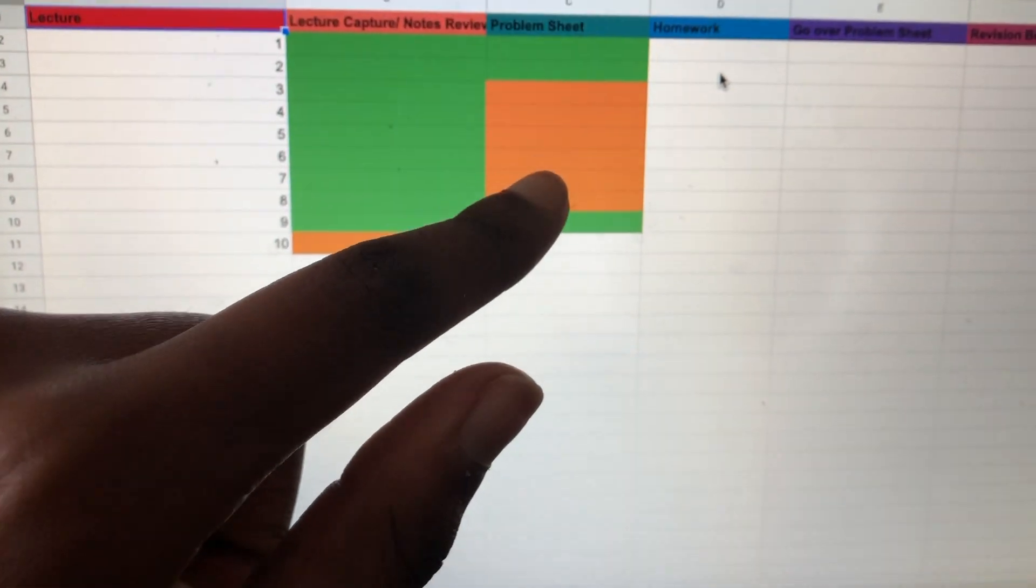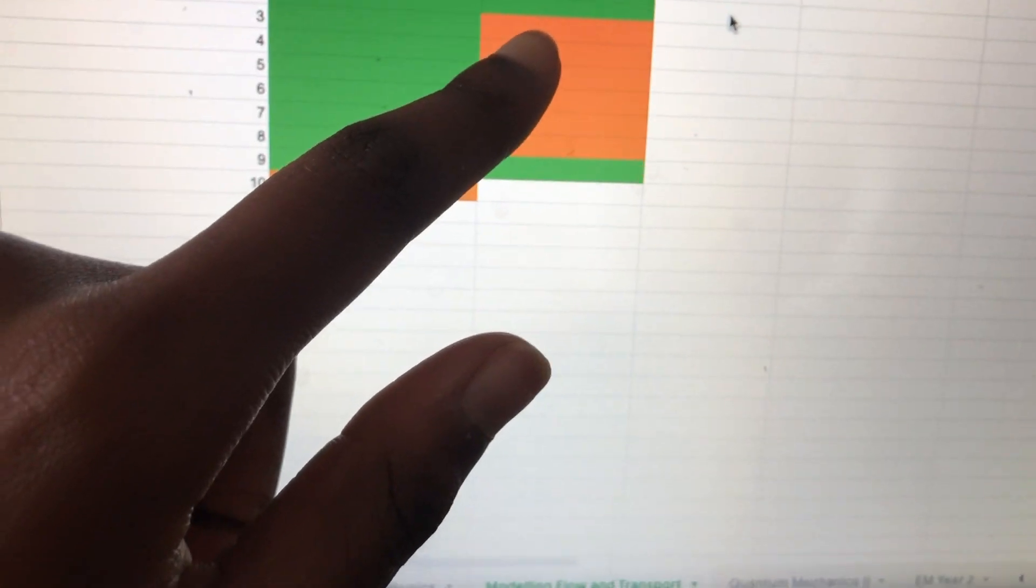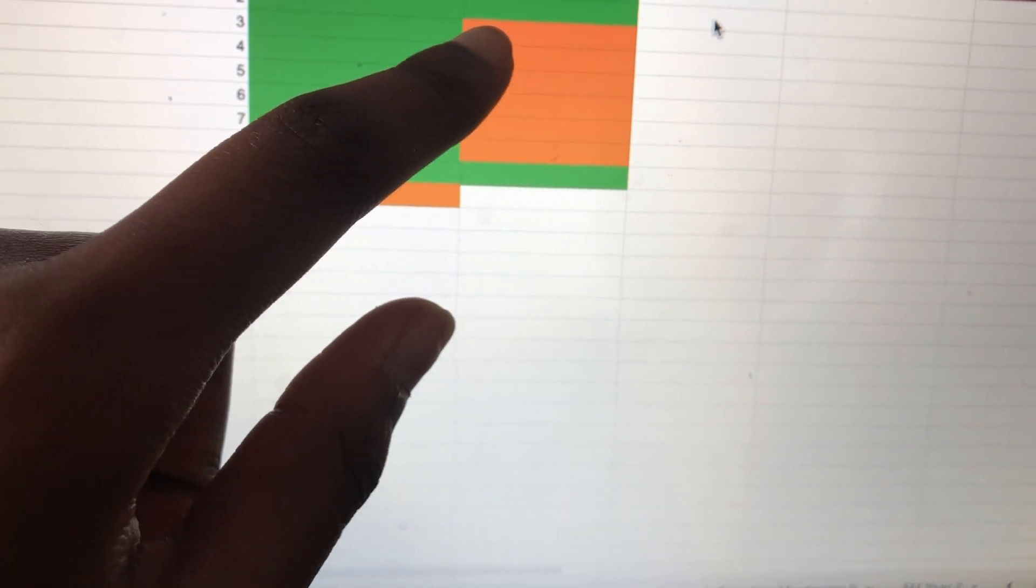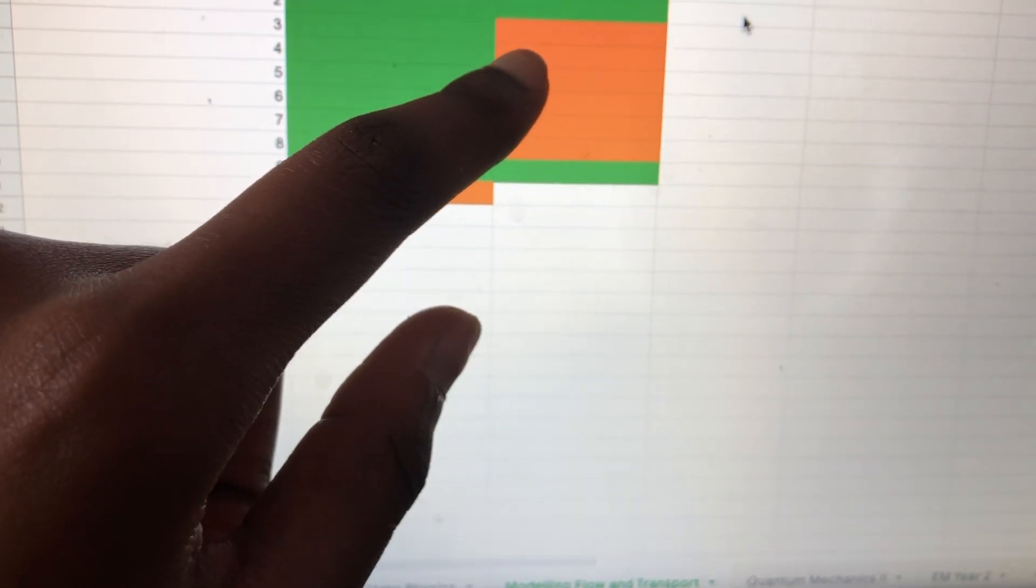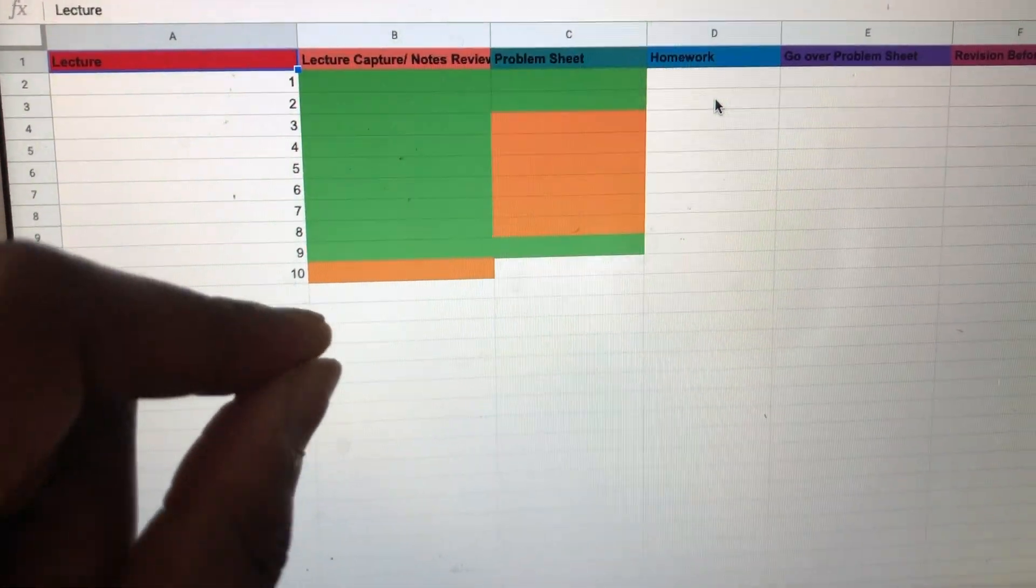These are all the tutorials that I haven't finished. Even if I'm left with a little bit of a question, I still mark it as orange, meaning that I need to go back and finish it.